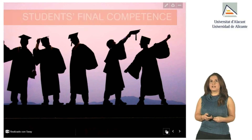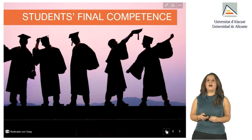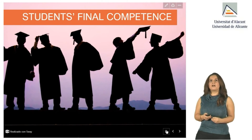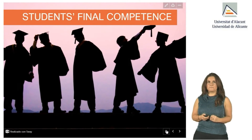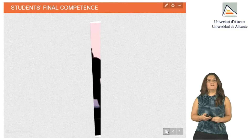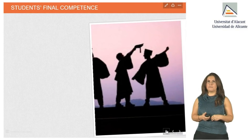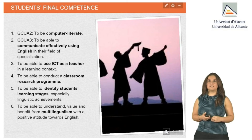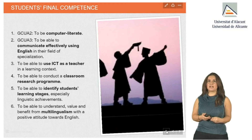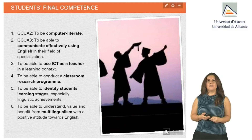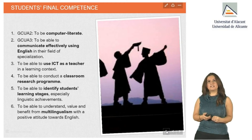All these objectives can be summarised in a list of seven competencies that are going to be developed and acquired during the course. Firstly, we will cover two basic competencies. All students will have to demonstrate at the end of the course that they have acquired the necessary computer skills. Also, they will have to be able to communicate effectively using English in the field of specialisation. These specific competencies are four.